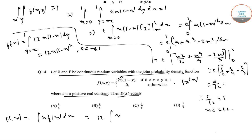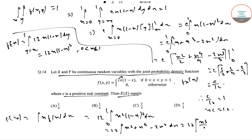So E(X) = integral from 0 to 1 of 12x^2(1-x)^2 dx. Expanding: 12 × integral of (x^2 + x^4 - 2x^3) dx = 12 × [x^3/3 + x^5/5 - x^4/2] from 0 to 1. Substituting the limits gives E(X) = 2/5.